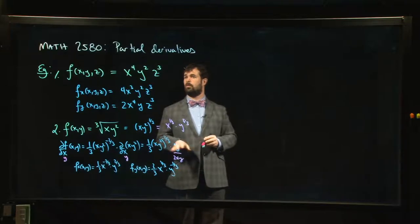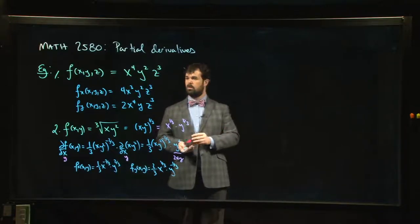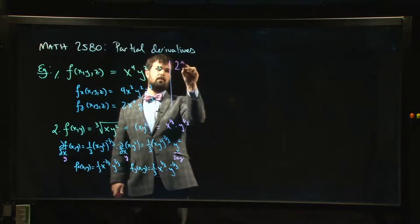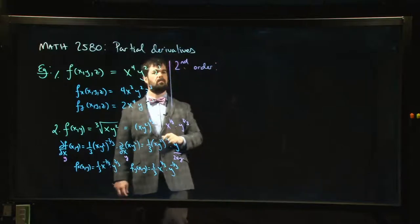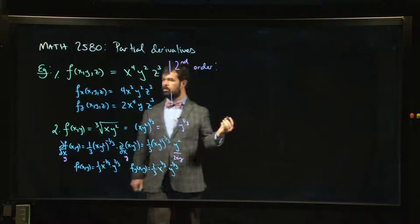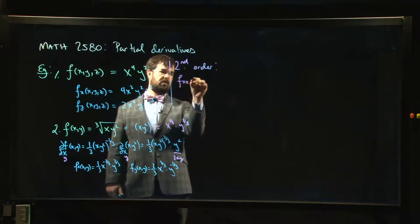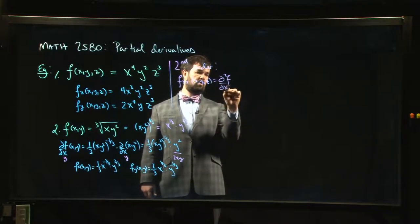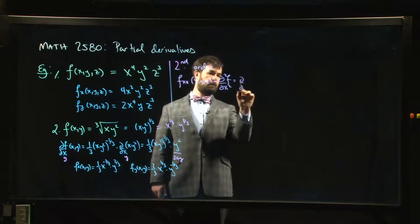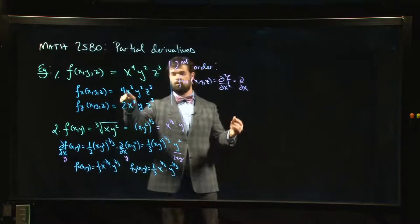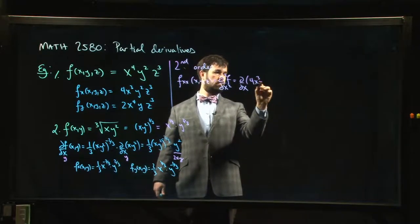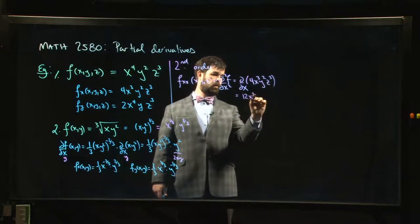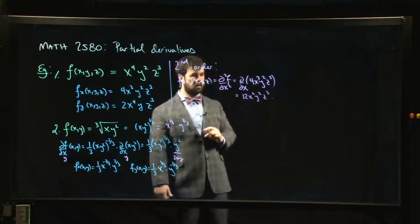Let's continue with more details on partial derivatives. One thing you can do is look at second-order partial derivatives. For example, f_xx of (x,y,z) — also denoted d²f/dx² — means you take the partial derivative of the partial derivative. We've already done the first partial derivative, so we plug that in and do one more derivative, giving us 12x²y²z³.